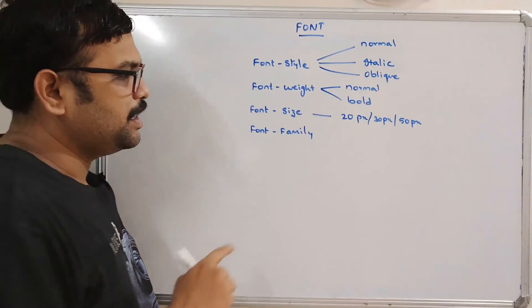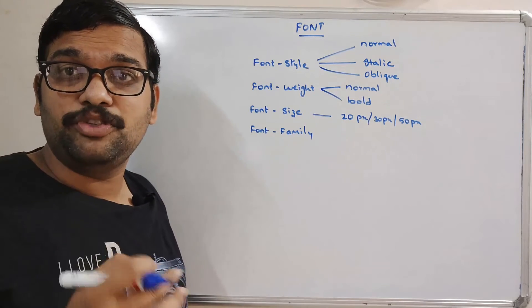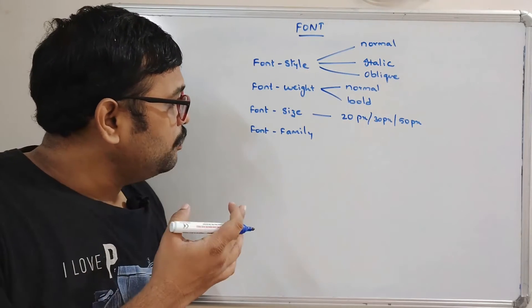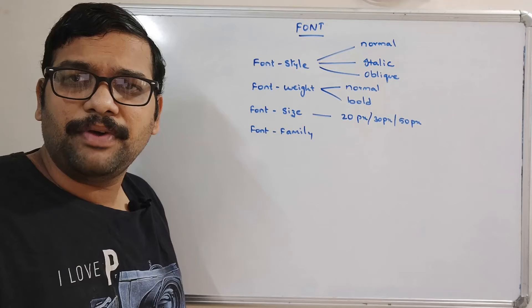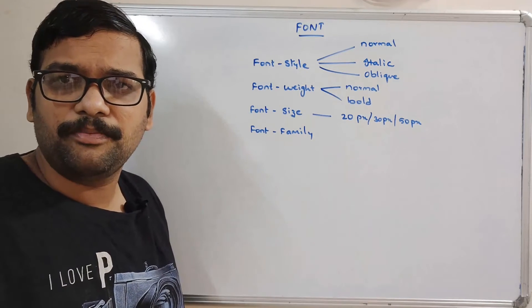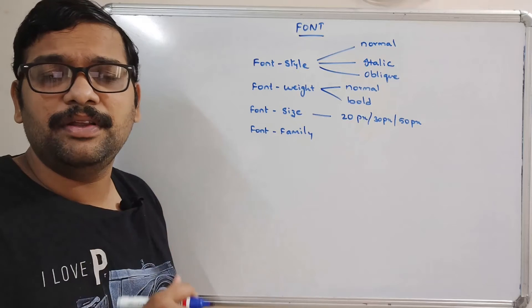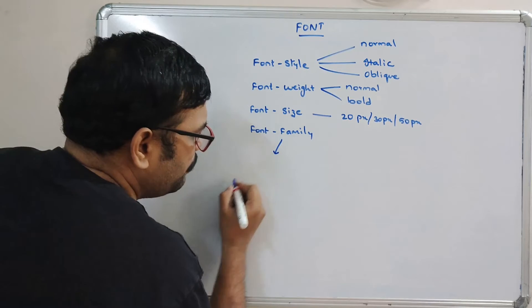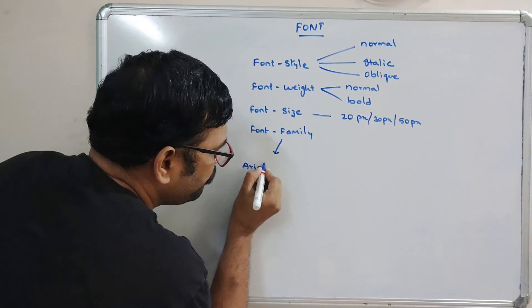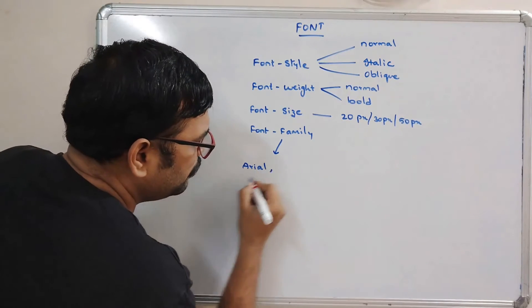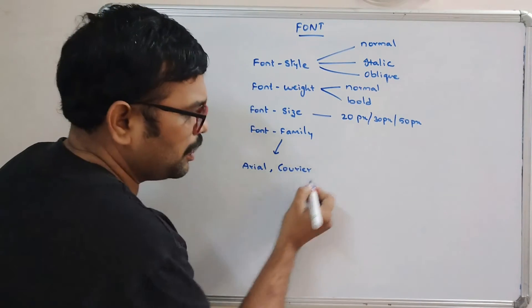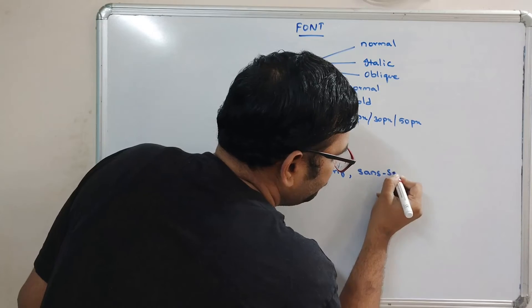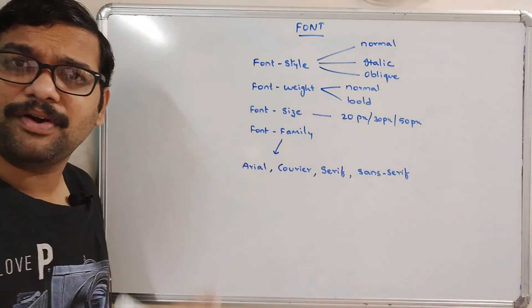Coming to font family, there are a lot of font families like Times New Roman. We can give a number of font families separated by commas. For example: font-family: Arial, Courier, serif, sans-serif. All these are font families and we can give multiple names for this property.